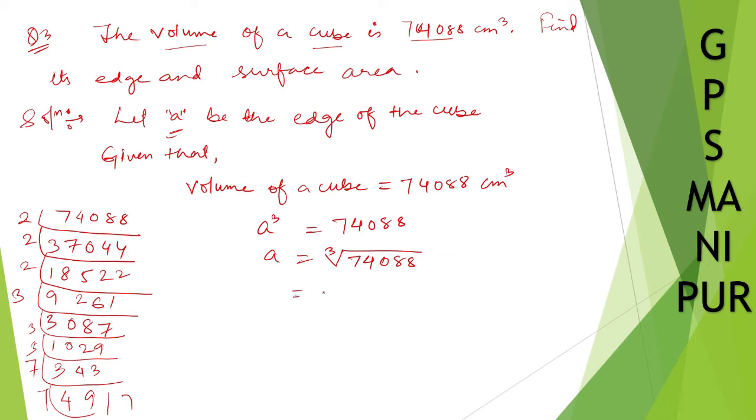Cube root of 2³ × 3³ × 7³. Since cube and cube root cancel, we get 2 × 3 × 7 = 42 cm.